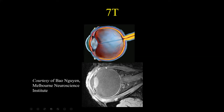The choroid is a very vascular region of the globe. On this contrast-enhanced T1-weighted 7-Tesla image, we can see enhancement of the choroid, and also enhancement of the ciliary body and eventually into the iris. It is important to understand these various layers, because when we start talking about congenital malformations involving the globe, a lot of this relates back to the various anatomic layers.